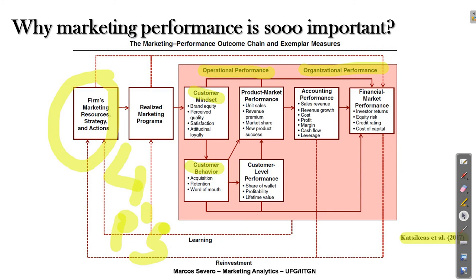This illustration from Katzikeyas' article summarizes the main measures that marketers must understand and conceptualize inside the organization, and how they can be categorized inside two big dimensions of performance: operational and organizational. In the next lectures, I will continue with the definition of marketing analytics, and in the practical part of this course we are going to try to estimate some models to identify the influence of marketing programs on different marketing performance measures.